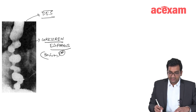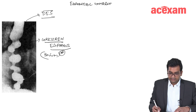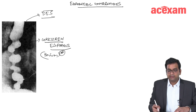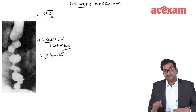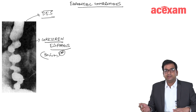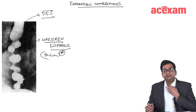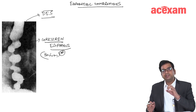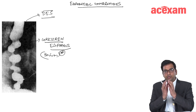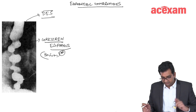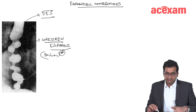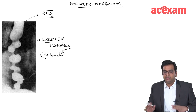Before discussing diffuse esophageal spasm, it is important to understand the types of esophageal contractions. Primary esophageal contraction is triggered by voluntary swallowing and is progressive. Secondary contraction is also progressive and is triggered by local distension of the food bolus.